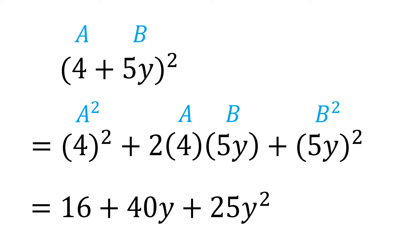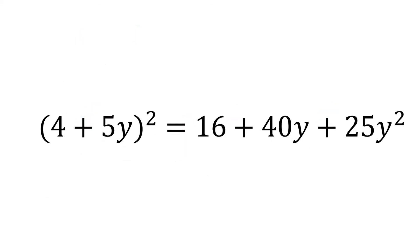Therefore, (4 + 5y) squared is equal to 16 plus 40y plus 25y squared. Now I hope you get the idea on how to get the square of the sum of two terms by recognizing it as a special product.